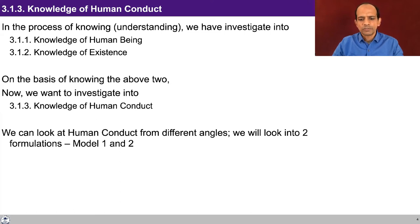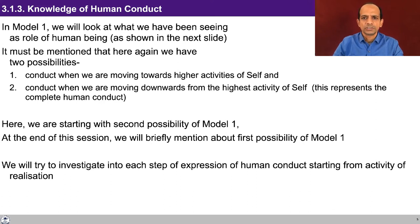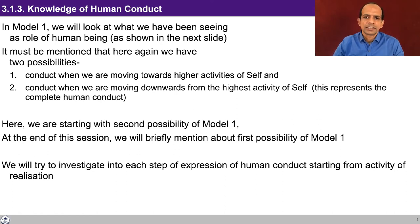We look at human conduct from two different angles — two formulations: model one and model two. Model one is based on the clarity we had while discussing the content in modules three and four. In model one, based on our discussion of knowledge of human being and knowledge of existence, we try to understand human conduct. There are two possibilities: one when we are moving from block B2 to block B1, that is moving from lower activity to higher activities, and the other when realization is there and we are moving to the lower activities guided by the higher activities.